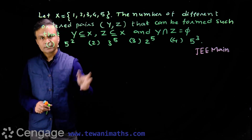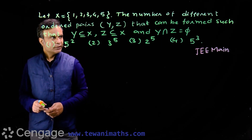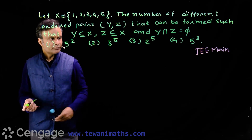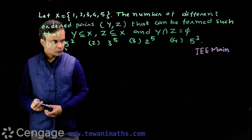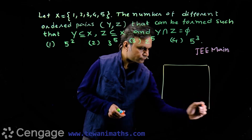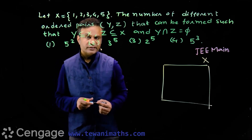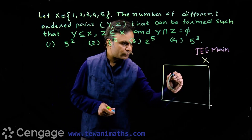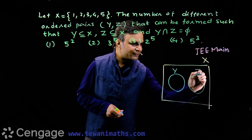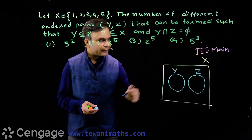Here, set X is the universal set and Y and Z are subsets of set X, and Y and Z are disjoint sets — their intersection is the null set. Let's put this in the form of a Venn diagram. We have universal set X, and Y and Z are subsets of X placed as disjoint sets.